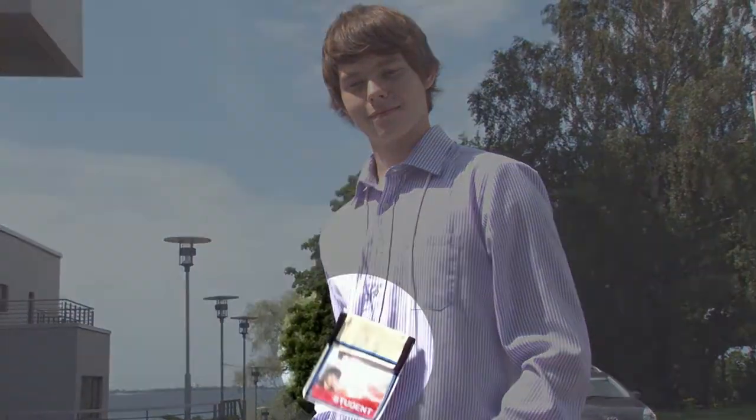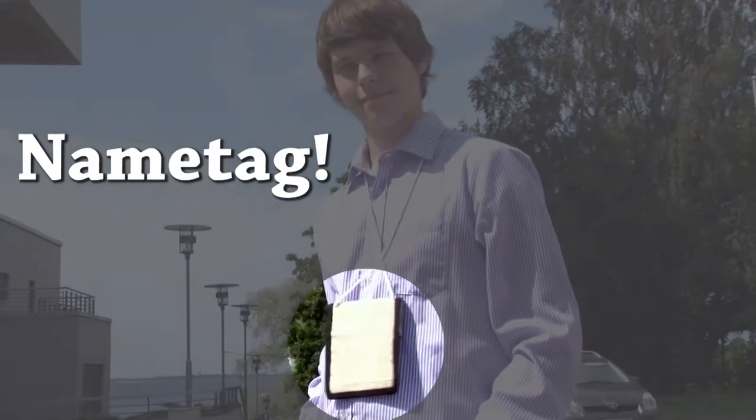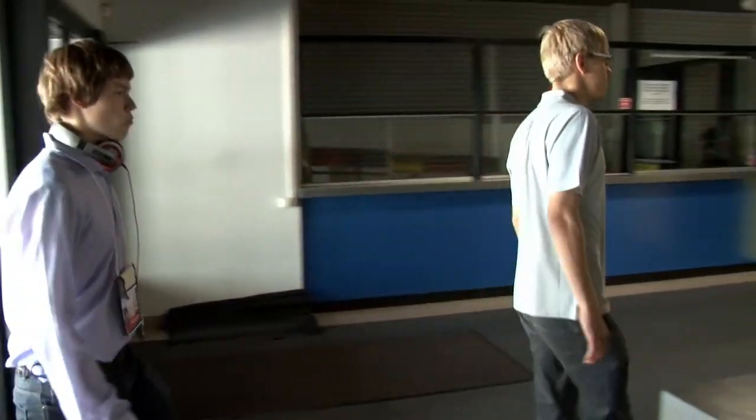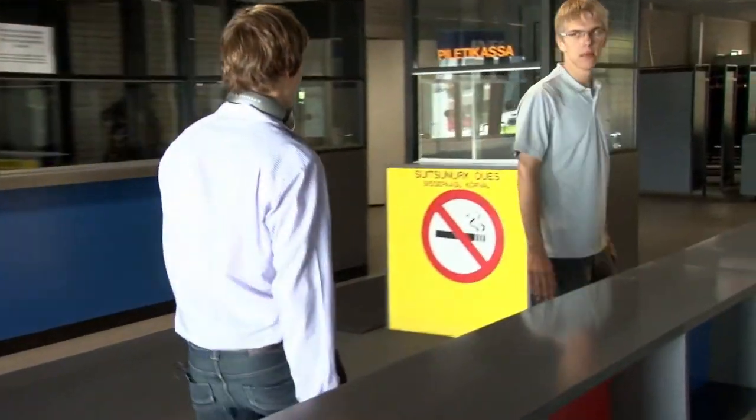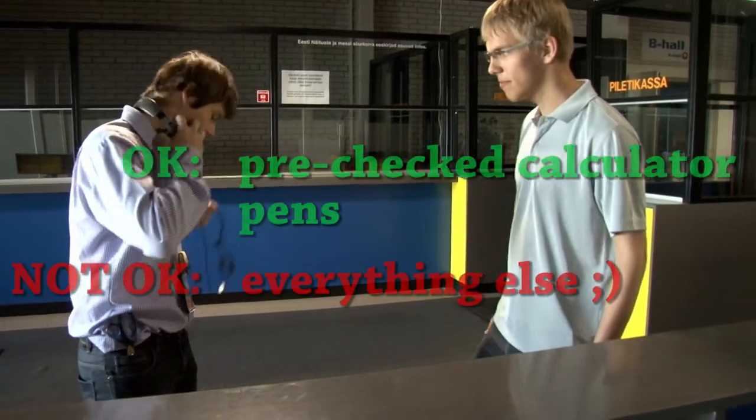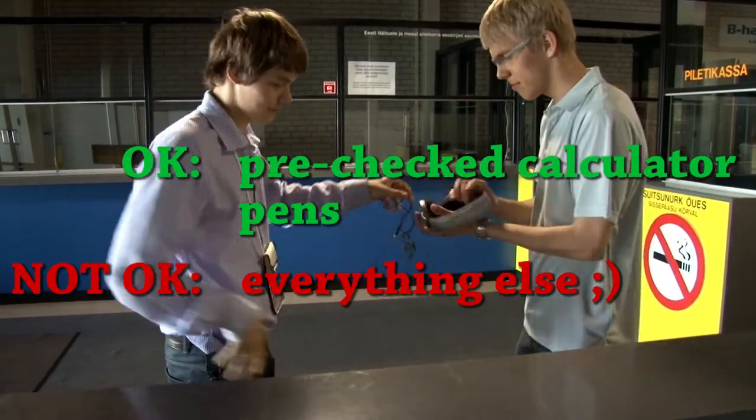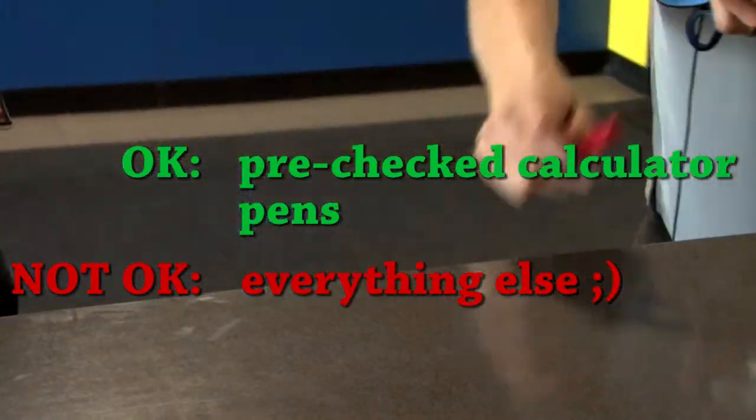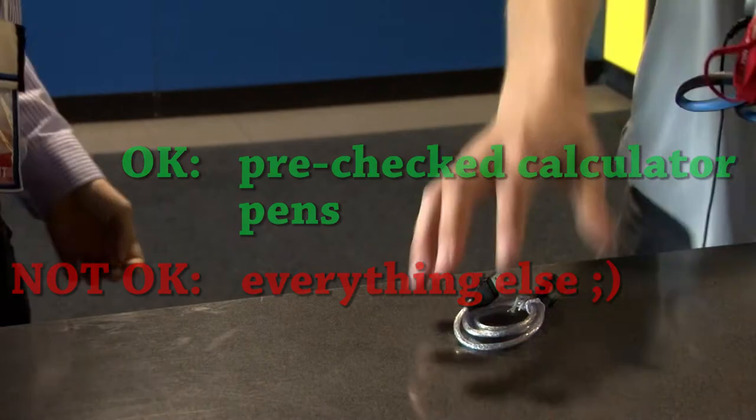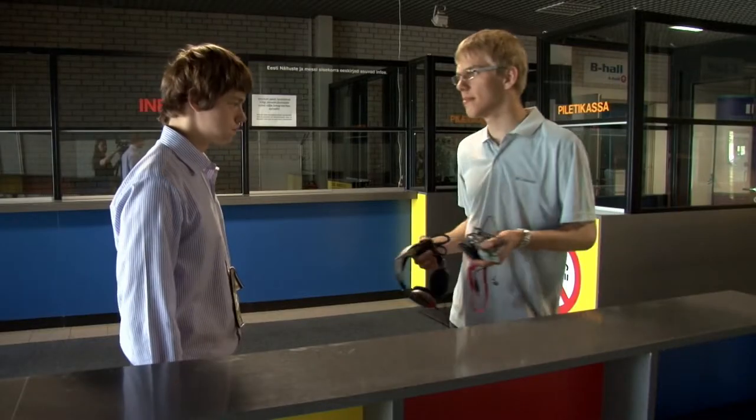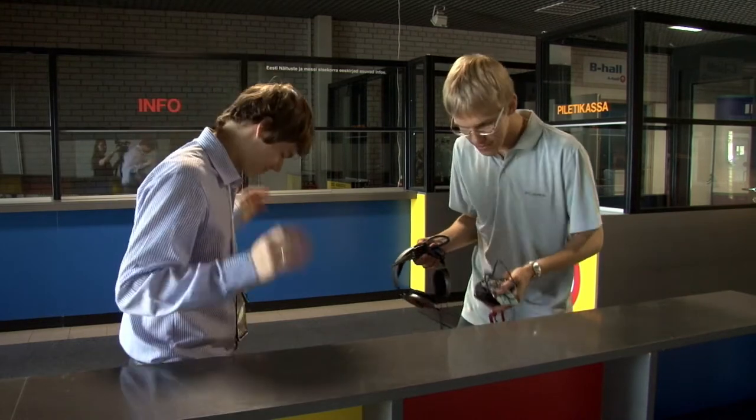Before leaving the hotel, Albert made sure that he had his name tag with him. When arriving to the competition venue, make sure to only have with you the things allowed by the rules: a pre-checked calculator and some pens in a plastic bag. Better leave all other personal belongings to the bus. In case you forgot, give them to your guide before entering the competition grounds.